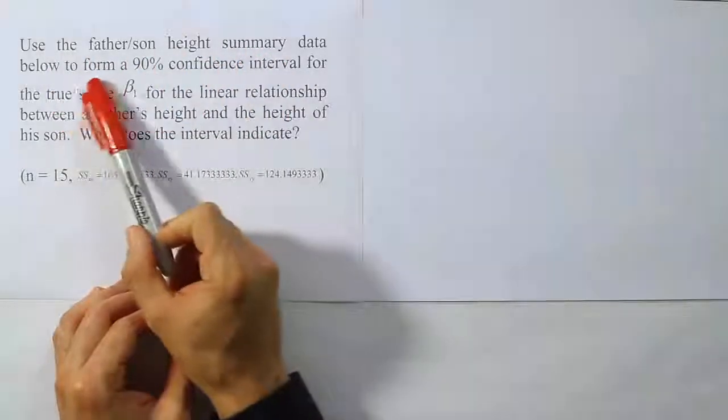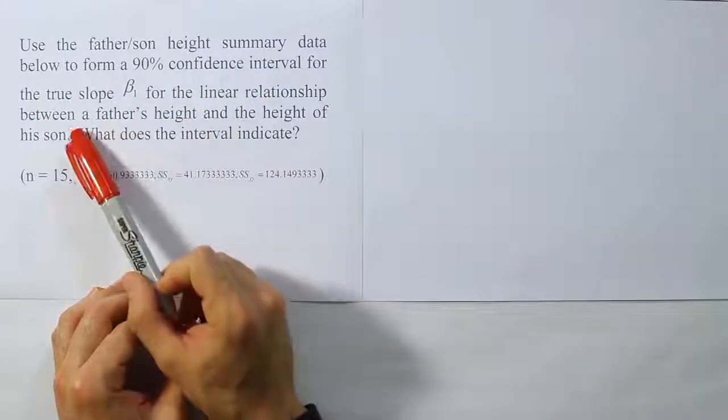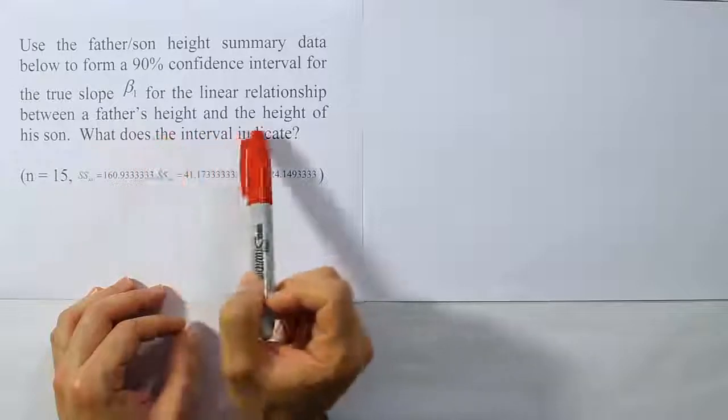Use the father-son height summary data below to form a 90% confidence interval for the true slope beta 1 for the linear relationship between a father's height and the height of his son. What does the interval indicate?